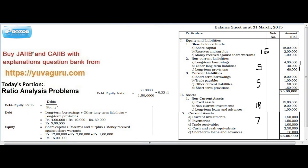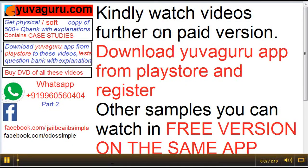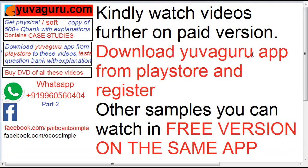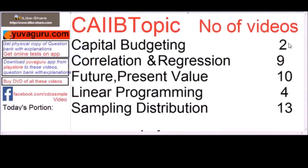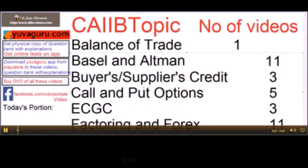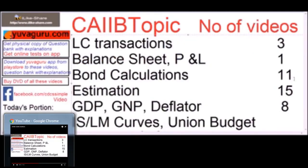You can purchase the question bank from ivaguru.com. Keep watching further videos on the paid version of the iVaGuru app, downloadable from the Play Store. This app contains question banks, notes, online tests, and video lectures. Topics covered include capital budgeting, correlation, future and present values, linear programming, sampling distribution, balance of trade, buyer's credit, supplier's credit, call and put options, ECGC, factoring, LC transactions, balance sheets, P&L, and bond calculations.